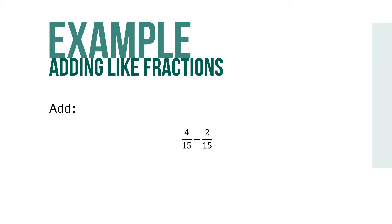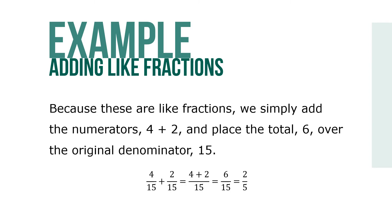Here's an example of adding like fractions. Let's add 4 over 15 plus 2 over 15. Because all are like fractions, we simply add the numerators, 4 plus 2, and place the total 6 over the original denominator 15. This gives us the fraction 6 over 15, which reduces by 3 to 2 over 5.